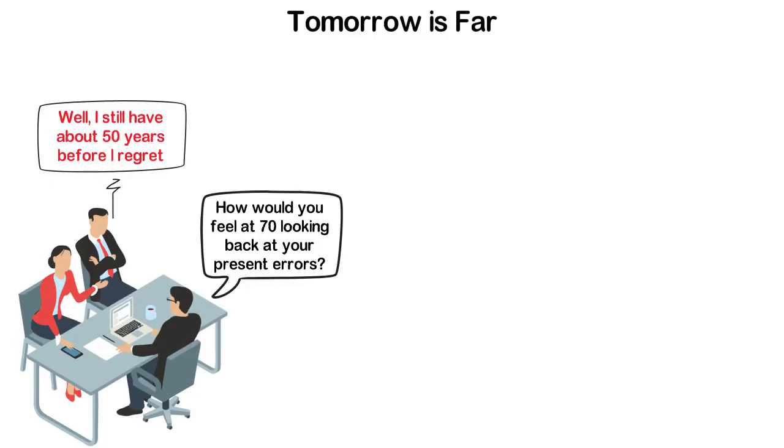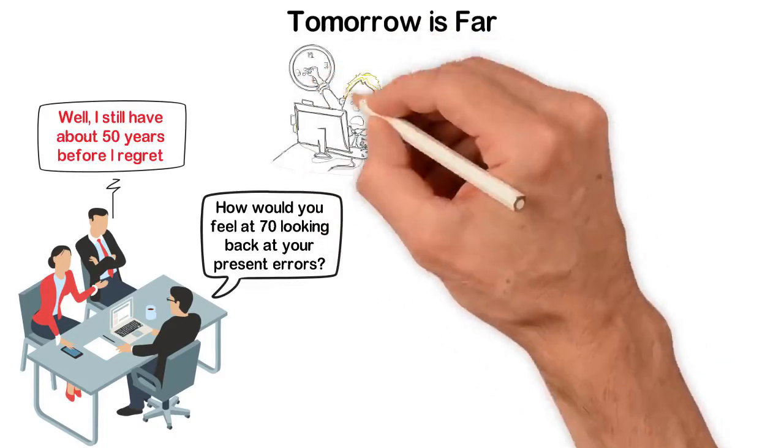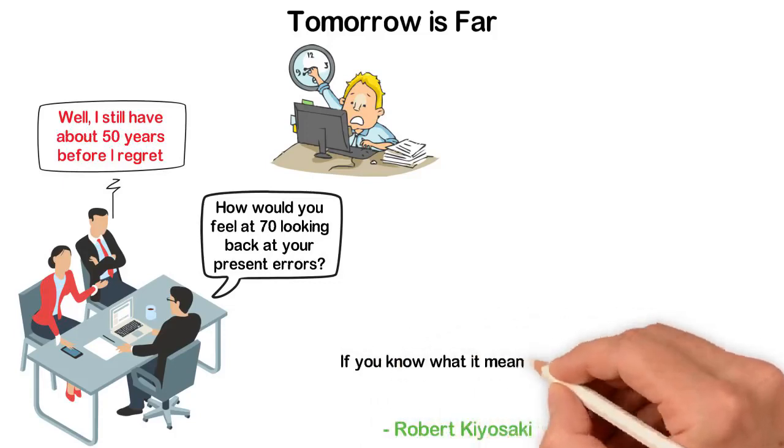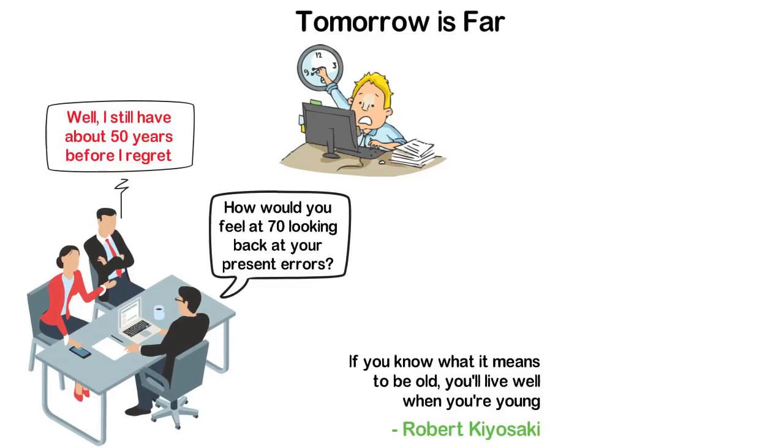Don't deceive yourself. Tomorrow is now. If you are too young, go and ask people who are 50 and above. I tell you, these people didn't know how they clocked 50 because time goes so fast. I once read a quote from Robert Kiyosaki that went something like, if you know what it means to be old, you would live well when you are young. I think you should think about that and be willing to go through the pains of discipline now.